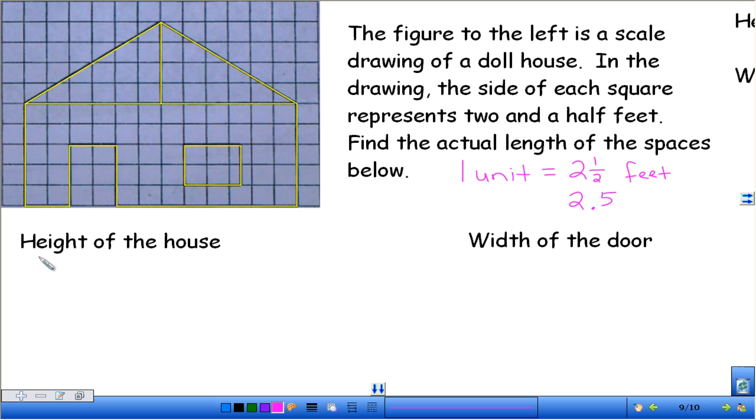So down here, I want to know the actual length of the height of the house. So when we go through, the height of the house goes from the bottom all the way up to its highest point. So we're going to have to count from here to here to find our units. So we have 1 unit, 2, 3, 4, 5, 6, 7, 8, 9 units. So let me write this right here as my first ratio. So 1 unit, and I think you guys are more comfortable with decimals, so I'll just go ahead and do 2.5, equals 9 units, and then our actual amount is going to show up in feet down there.